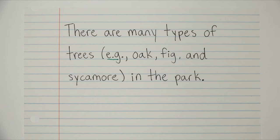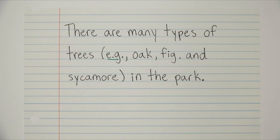There are many types of trees, e.g., oak, fig, and sycamore in the park. So here we have the abbreviation e.g. followed by a comma because it's being used like for example, which is a transition that in most cases requires a comma after it. And then we just have a list of those examples, which in this case is just a couple trees.